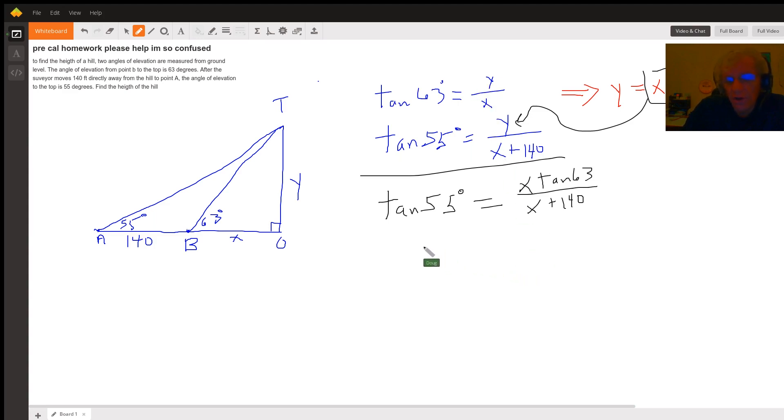So how do you solve this for x? Well, if we multiply tangent of 55 times x plus 140, we get this. And if I distribute this tangent of 55 over the terms inside the parentheses, I get this.